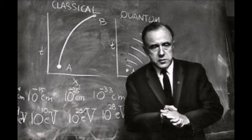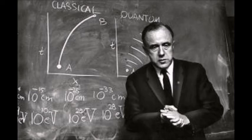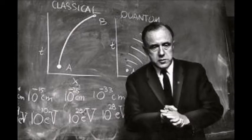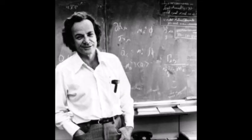Wheeler: Behind it all is surely an idea so simple, so beautiful, that when we grasp it in a decade, century or millennium, we will all say to each other, how could it have been otherwise? How could we have been so stupid? Feynman: I believe that a scientist looking at non-scientific problems is just as dumb as the next guy. Wheeler: The universe does not exist out there, independent of us. We are inescapably involved in bringing about that which appears to be happening. Feynman: Some people think that Wheeler's gotten crazy in his later years. He's always been crazy.